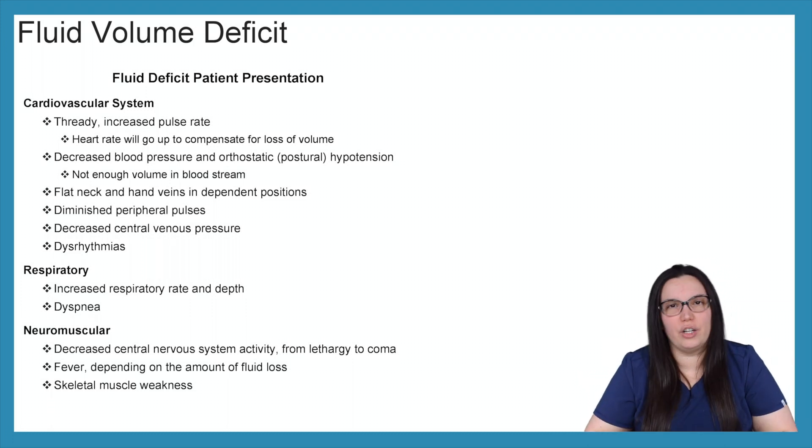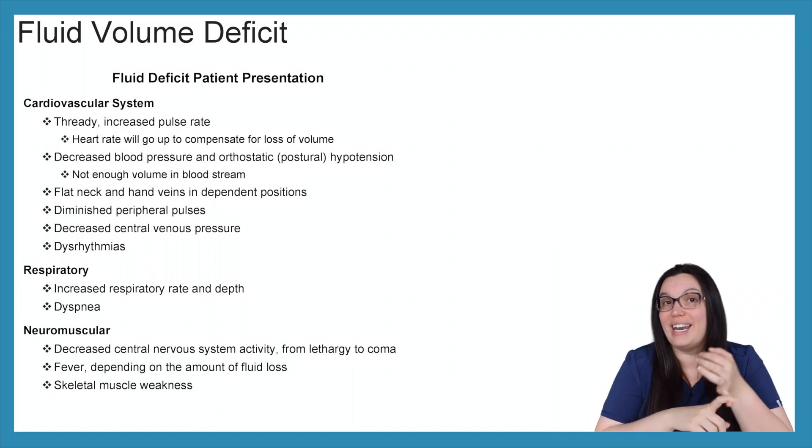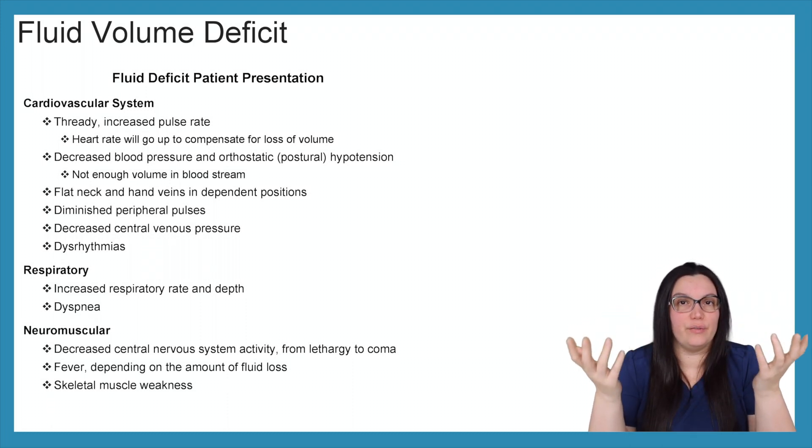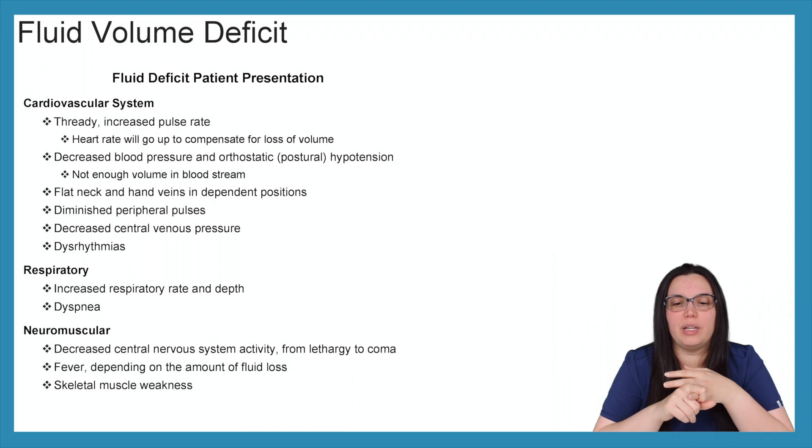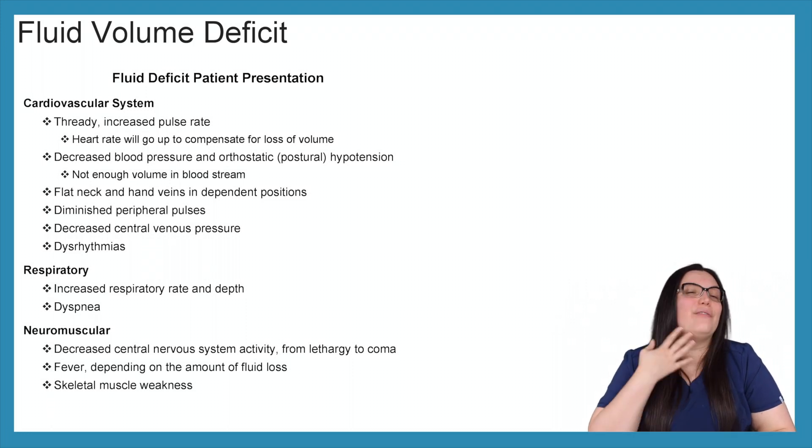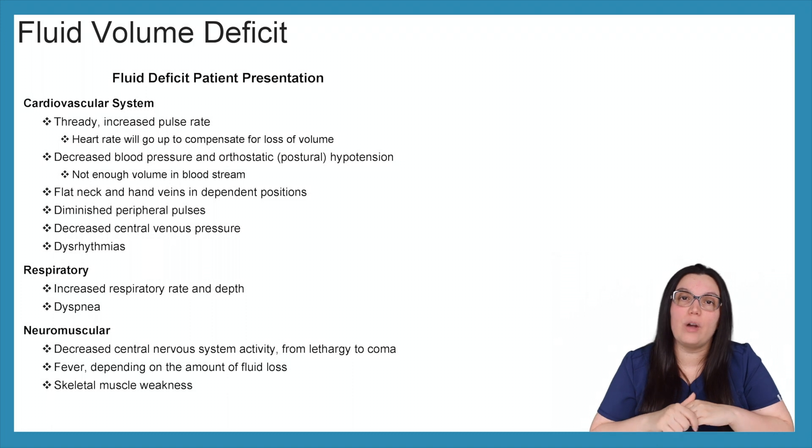So what is our patient going to look like when we're having fluid deficit problems? Well, when it comes to our cardiovascular system, they're going to have thready increased pulse rates. The heart rate will go up to try to compensate for that loss of volume initially. We're going to have a decreased blood pressure as well as orthostatic hypotension, because there's not enough volume within our bloodstream. We're going to have flat neck veins and hand veins while they're in a dependent position, diminished peripheral pulses, decreased central venous pressure, as well as dysrhythmias. As we start to have electrolyte changes, you're going to start to see the heart take a hit, and you're going to start to see these dysrhythmias.